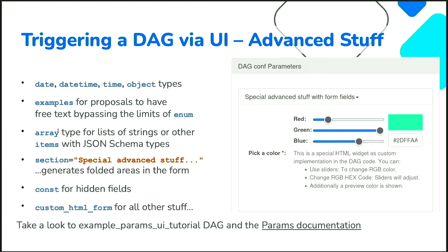Arrays are usually free text rendered as a list of strings, but you can also define typed arrays like a list of integers. If you have more than about 10 parameters, that would be overwhelming, so there is a sections feature that renders collapsible areas of the dialogue — you can fold and unfold to have standard parameters for 90% of use cases and advanced parameters separately. Const, from the JSON schema standard, is for fixed values the user shouldn't change; those values will be hidden in the UI.